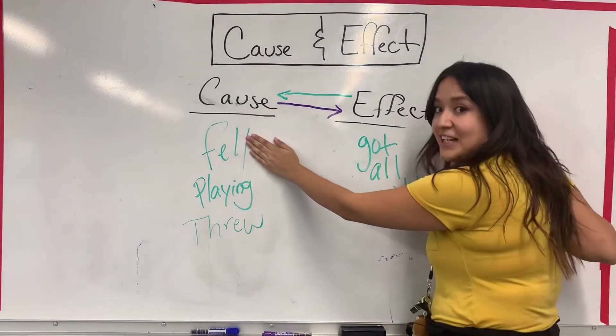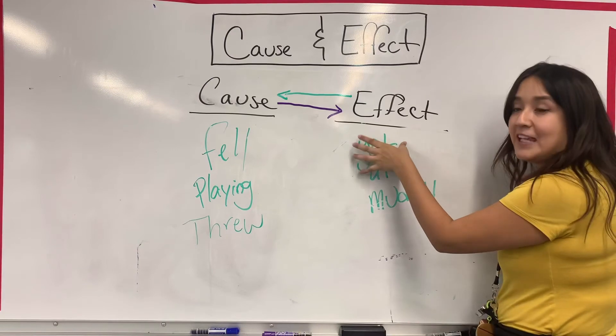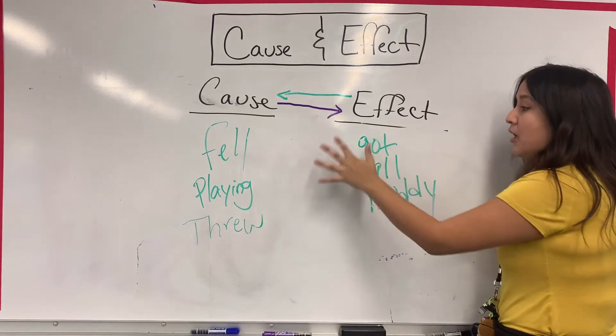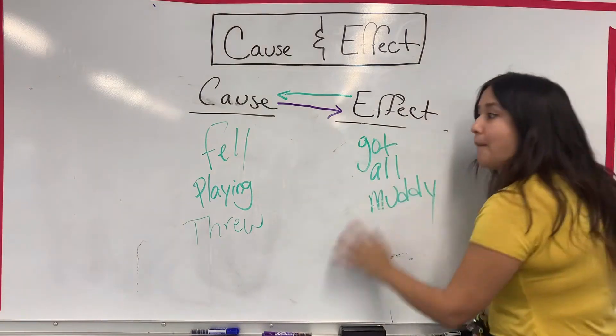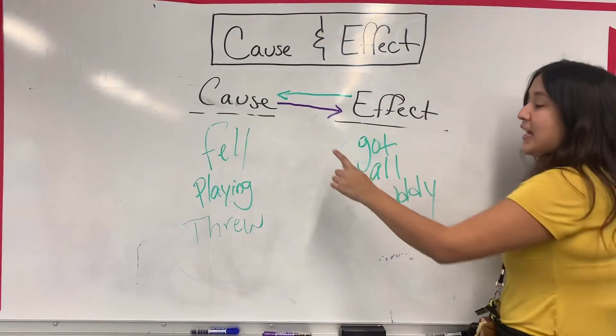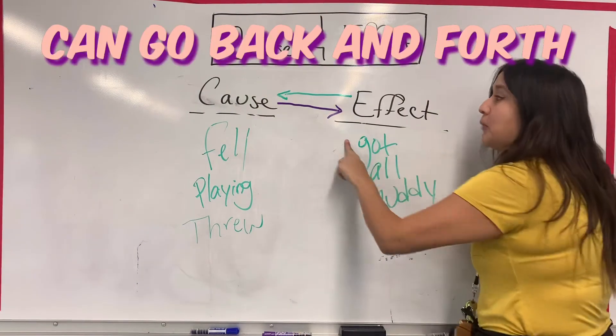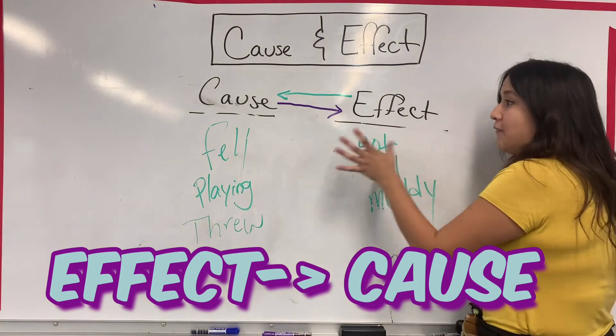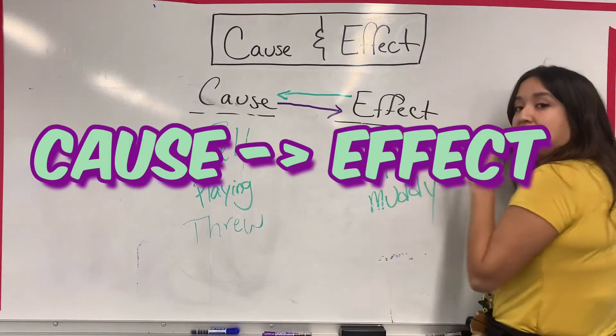If you have the event, you can tell me things that happened because of it. If you have the effect, that means this happened because this event did it first. That's cause and effect. You can go both ways. If you have this one, you can tell me what caused it. If you have the cause, tell me what happened because of it.